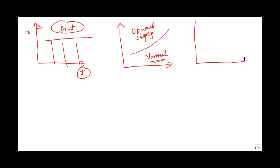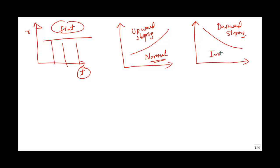One shape is a flat yield curve — that means for all time periods the interest rate is the same. Then we have the upward sloping, or normal, yield curve. You also have a downward sloping yield curve, which implies that when the time period is increasing, the interest rates are decreasing. This is also known as inverted — the normal scenario is upward sloping, and the opposite, the inverted scenario, is downward sloping.